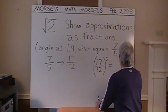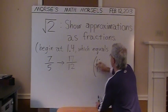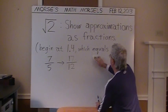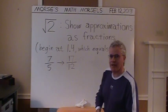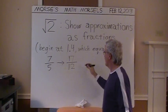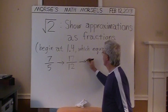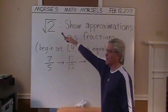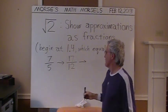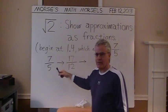Now, getting closer. You can build another fraction, kind of in the fashion of a snowball. I'll use an analogy. It gets still closer to the square root of 2.